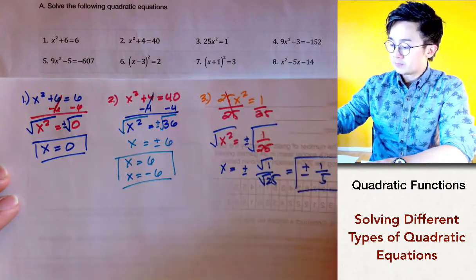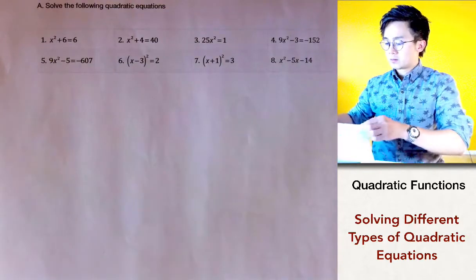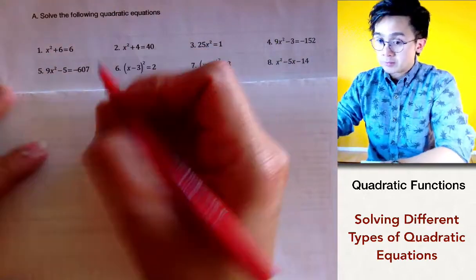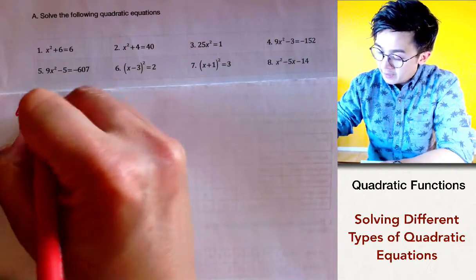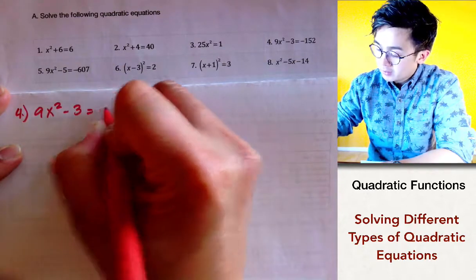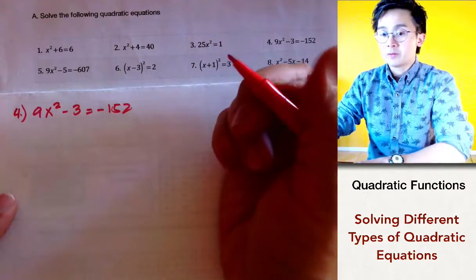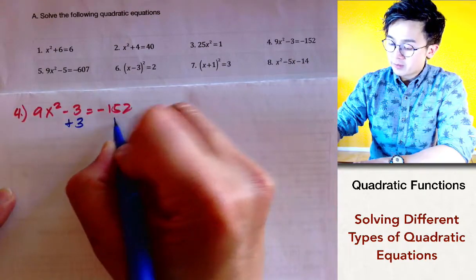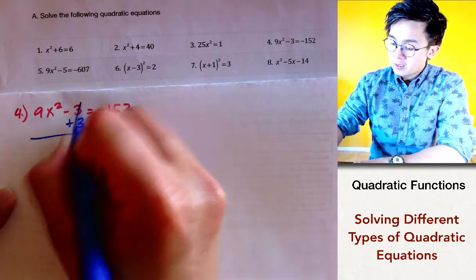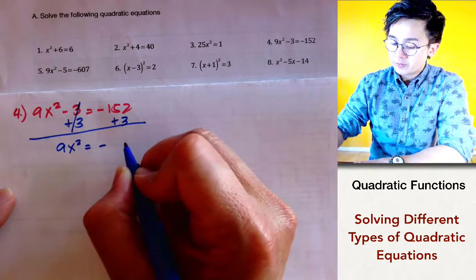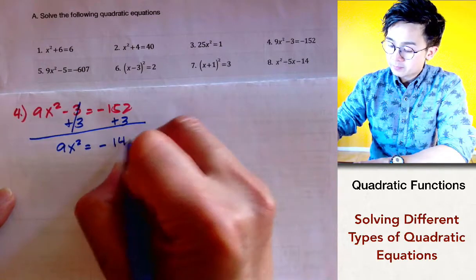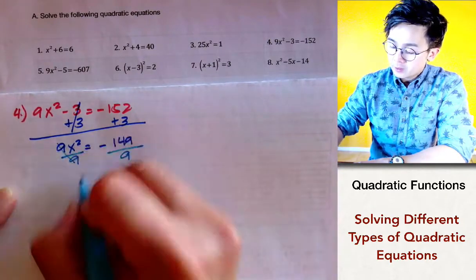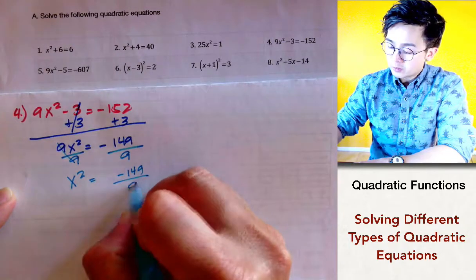For problem number four, we start by canceling the constant next to x. We end up with 9x squared equal to negative 149, and then we divide both sides by 9, giving us x squared equals negative 149 over 9.